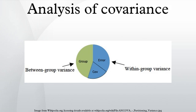Covariance is a measure of how much two variables change together and how strong the relationship is between them. Analysis of covariance is a general linear model which blends ANOVA and regression. ANCOVA evaluates whether population means of a dependent variable are equal across levels of a categorical independent variable, while statistically controlling for the effects of other continuous variables that are not of primary interest, known as covariates.